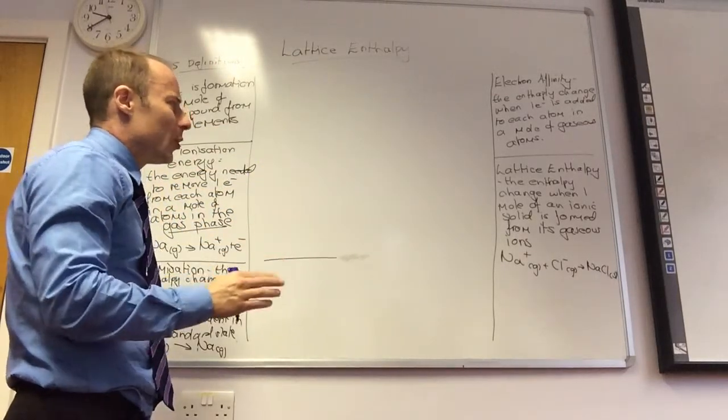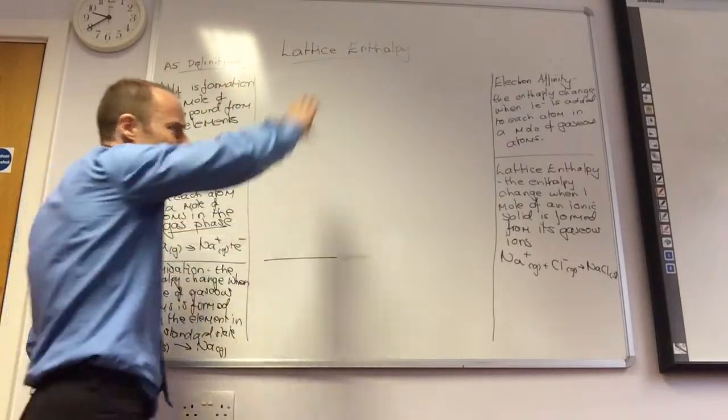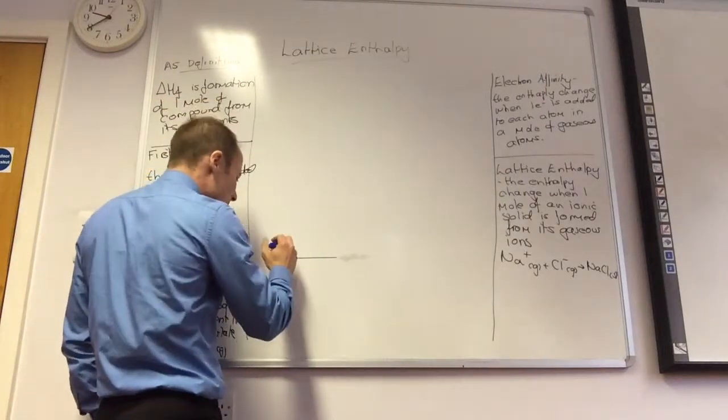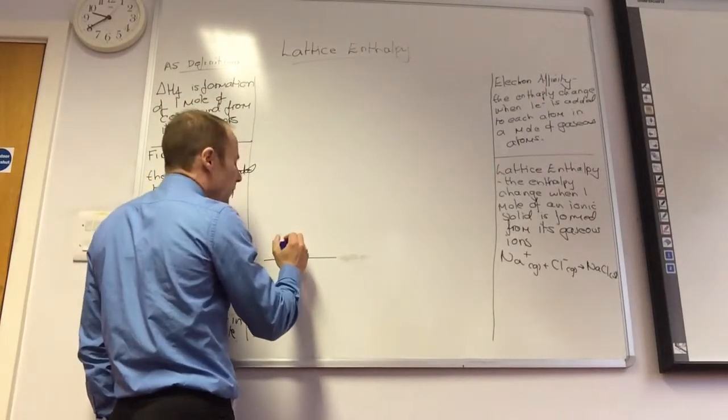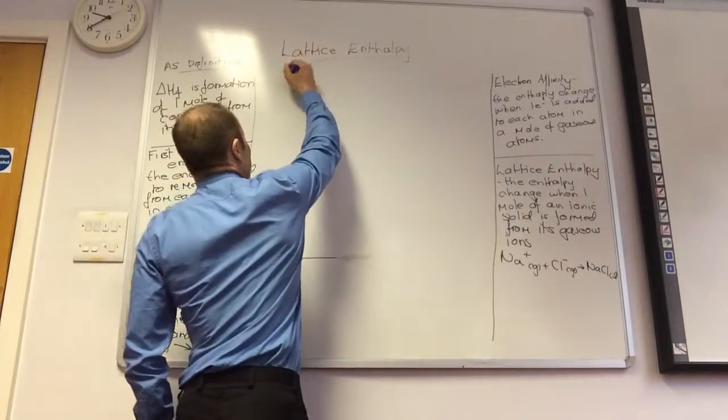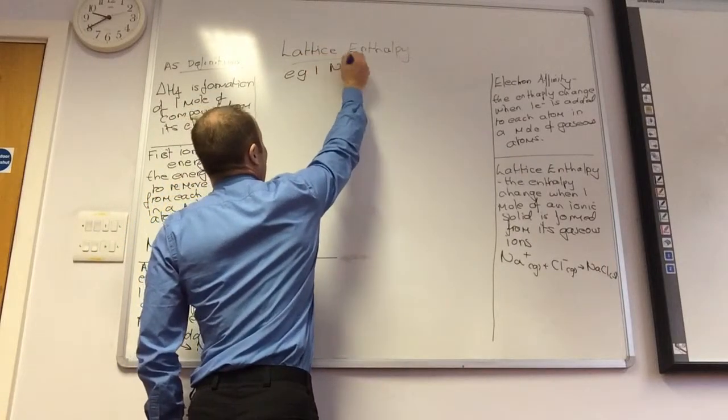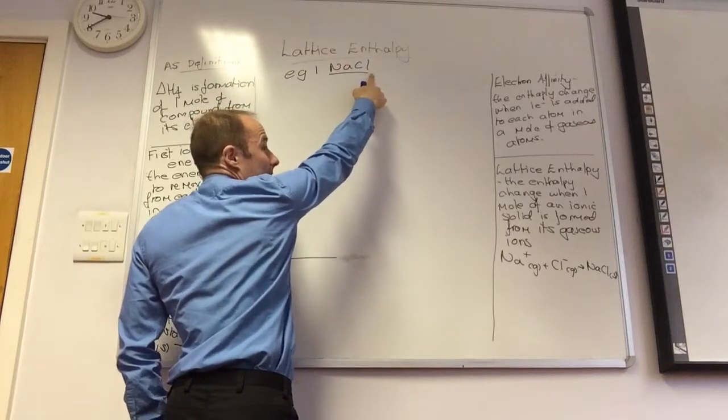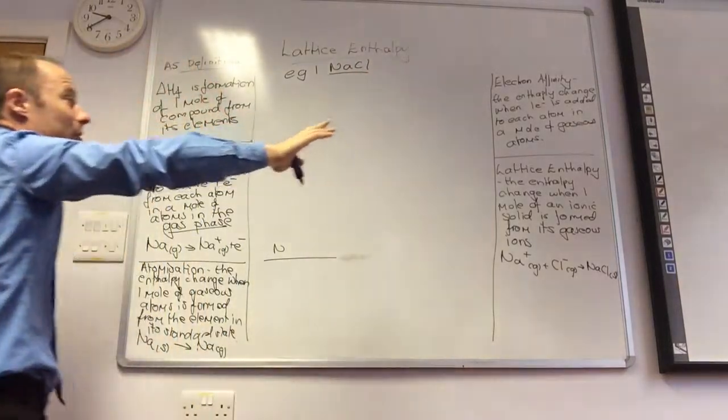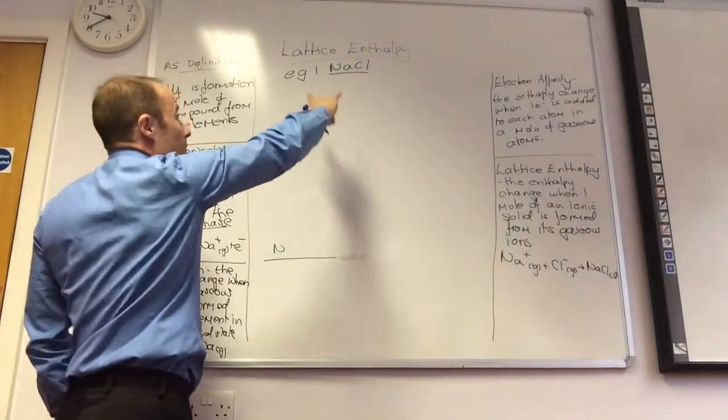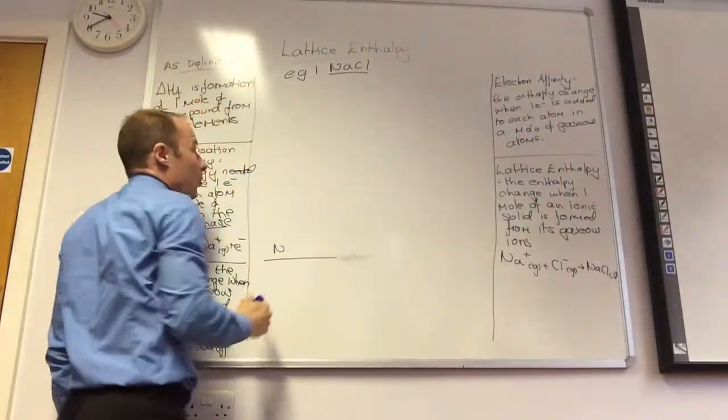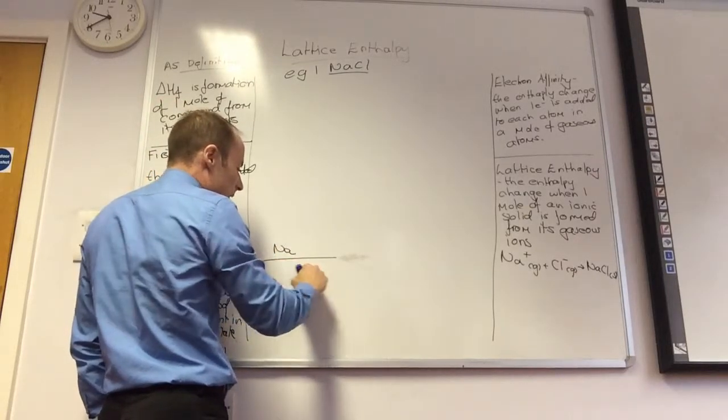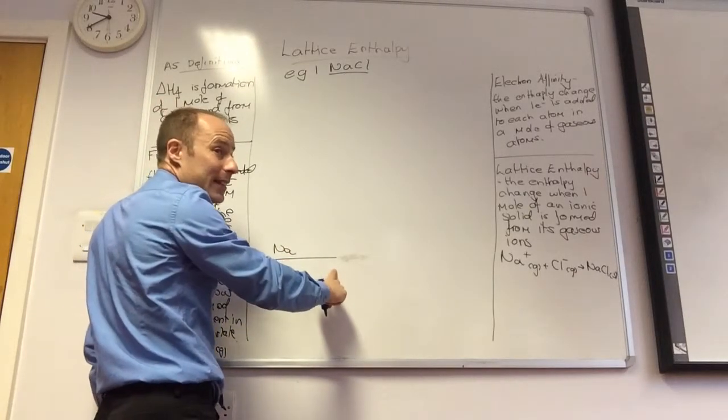We're then going to do a slightly more complicated one. We've got to bear these definitions always in mind. So I'm going to start off. I'm going to do it for sodium chloride. This is example one, NaCl. First thing, make sure you've got the formula right. If you stuff your formula up, your Born-Haber is going to go crazy. So that's my formula of sodium chloride, one sodium, one Cl. On the first line, I'm going to put my elements in their standard state.